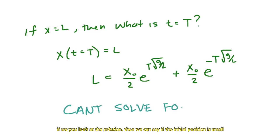So the next best thing is to use some assumptions. If we look at the solution, then we can say if the initial position is small, then we can justify that the total time will be large. Therefore, we can approximate the solution with one exponential function.